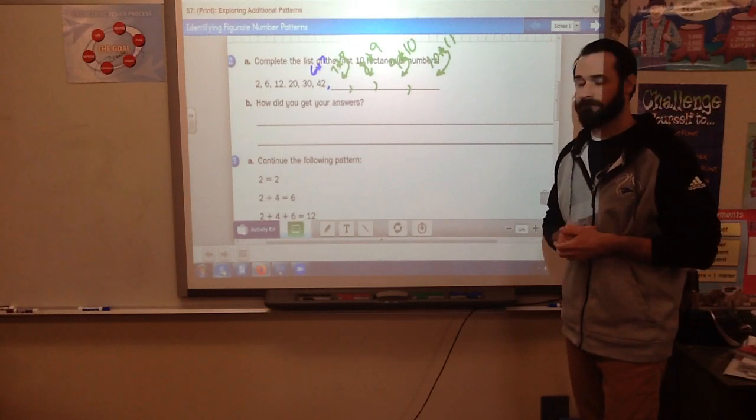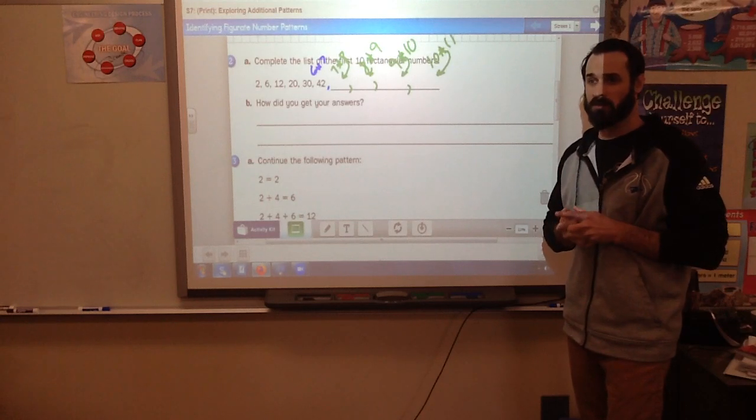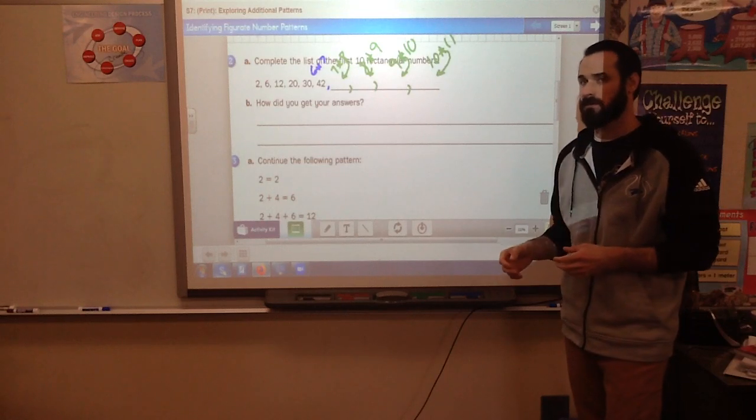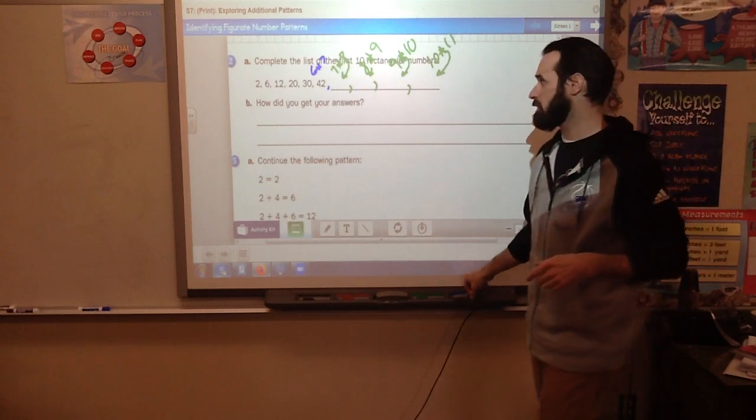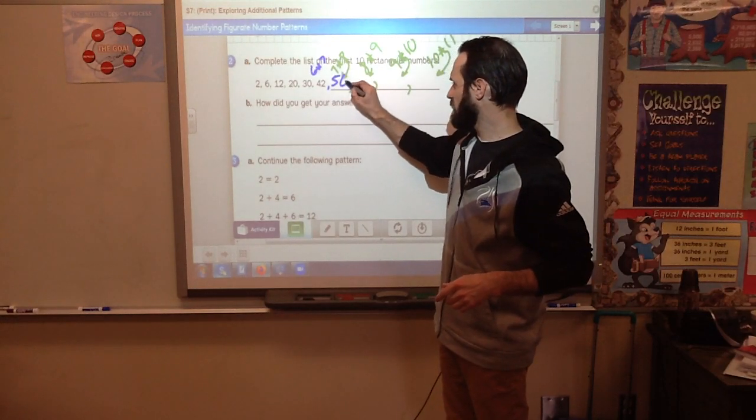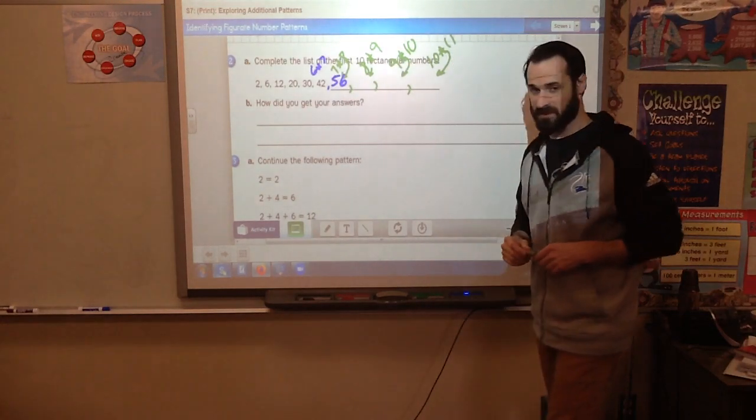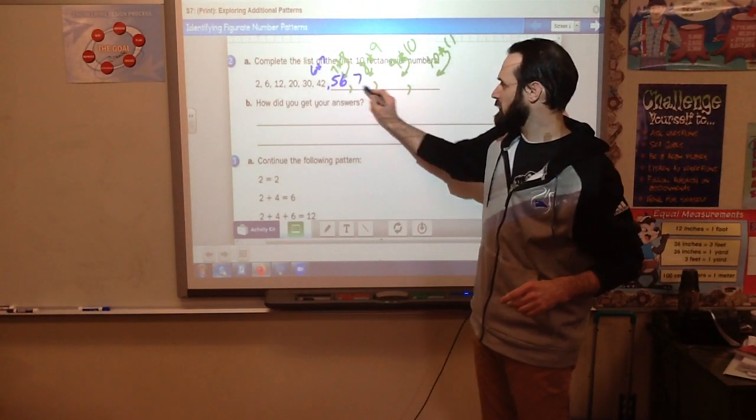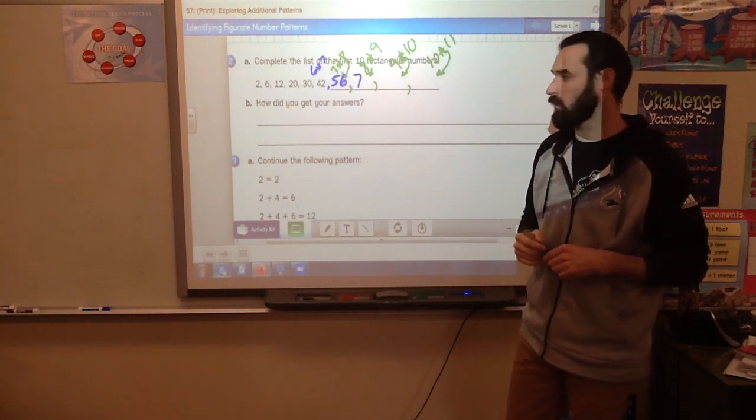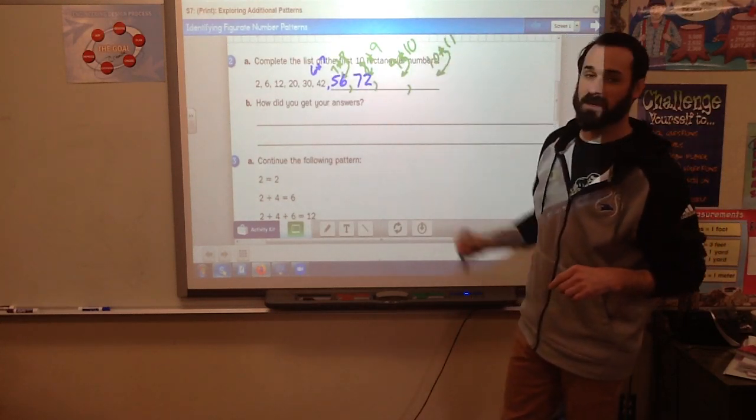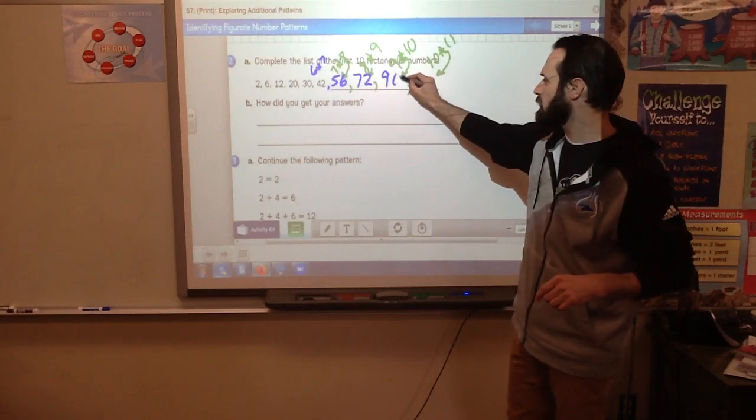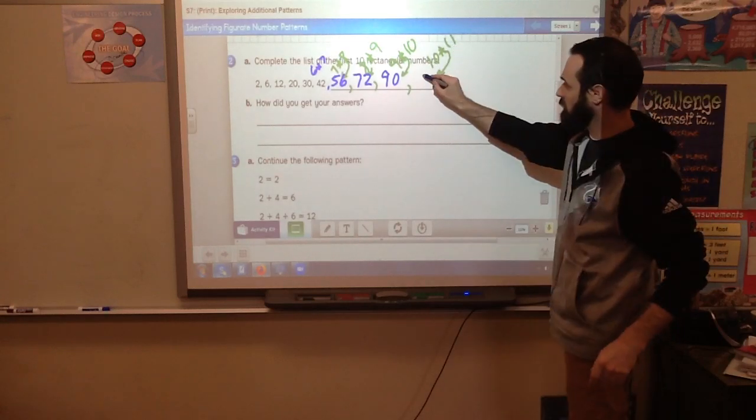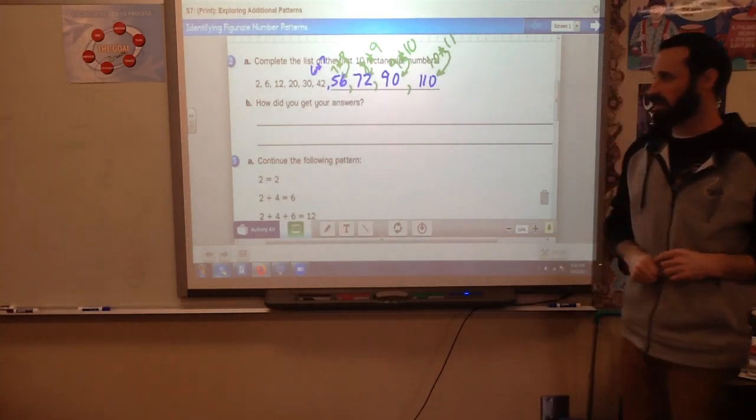Alright. 7 times 8, I know the rhyme that we use for that: 5, 6, 7, 8. 56 equals 7 times 8. 8 times 9, what I would do there is think about the 8, what's 1 less than that? That's 7. 7 plus what is 9? 2. So it's 72. 9 times 10, that's really easy. 9 times 1 is 9, add a 0, that's 90. 10 times 11 is 11, add your 0, that's 110. So those are the numbers you should have come up with.